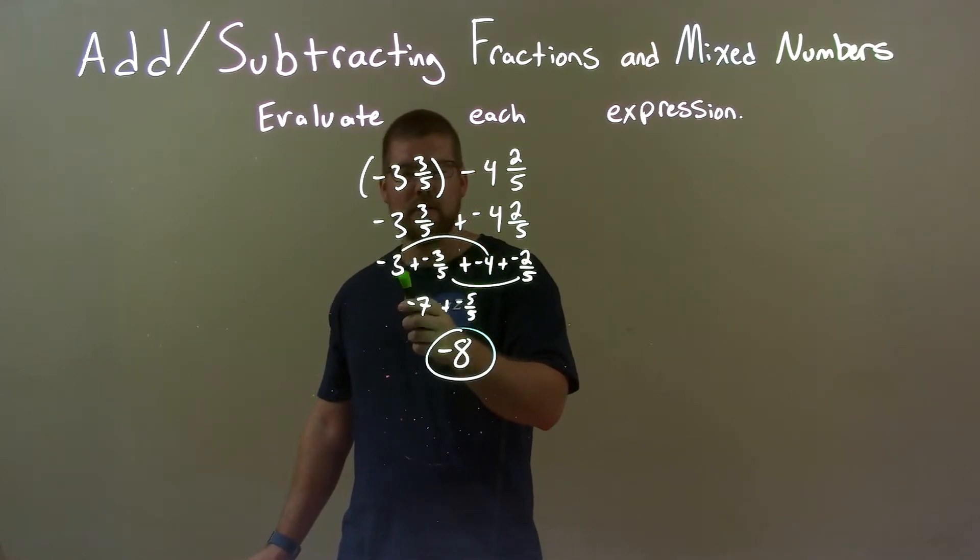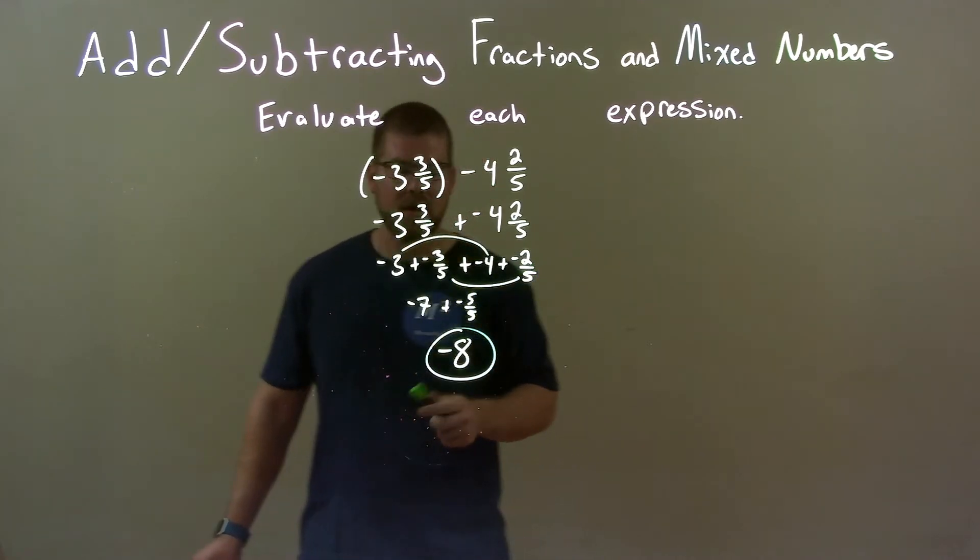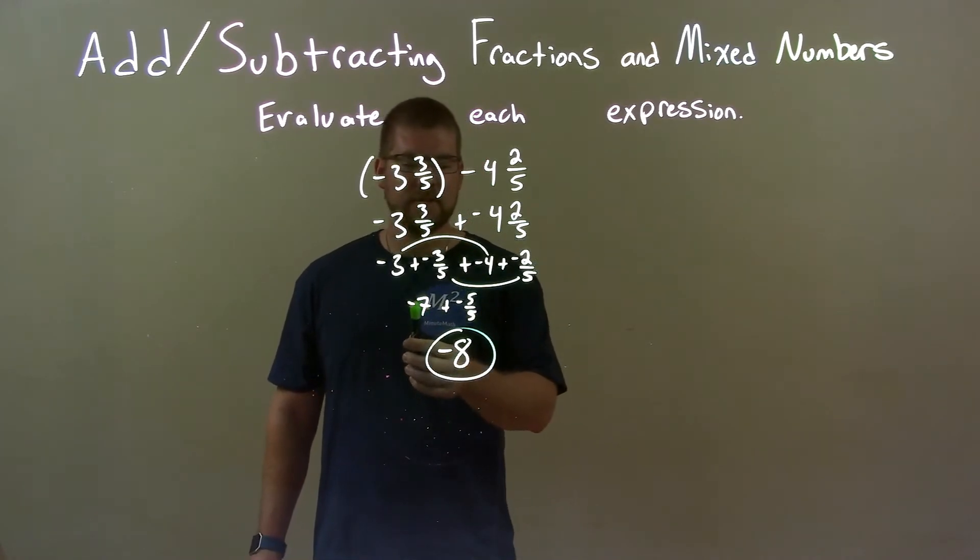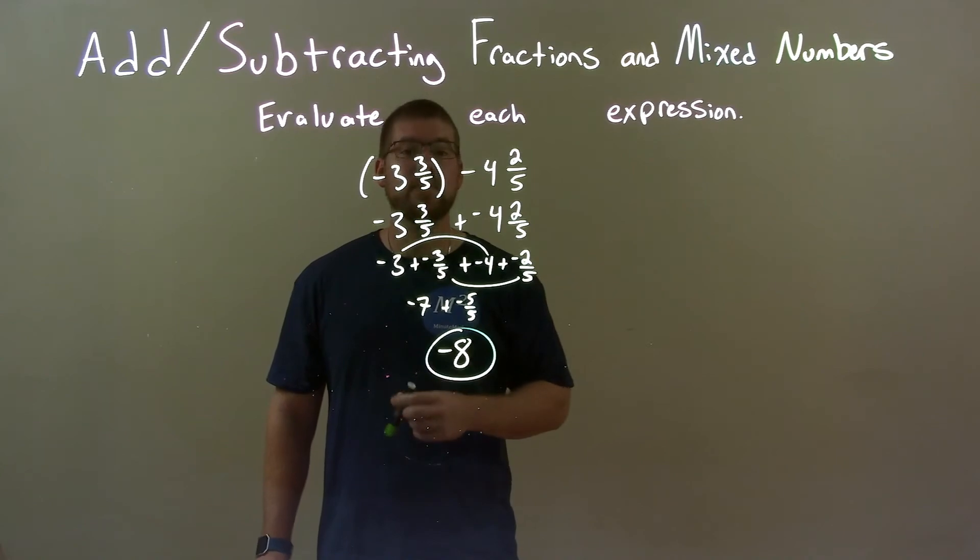that negative 3 and negative 4 adds to negative 7 and negative 3 fifths and negative 2 fifths or negative 5 fifths. Negative 5 fifths is the same thing as negative 1. So we have negative 7 plus a negative 1, which is a negative 8. So negative 8 is our final answer.